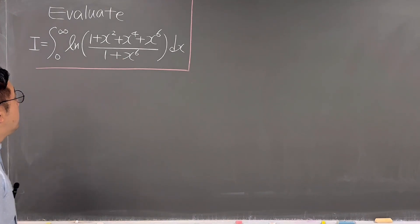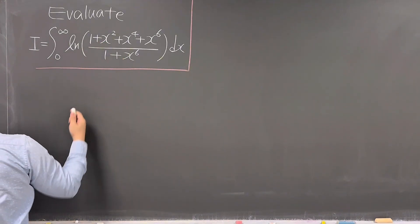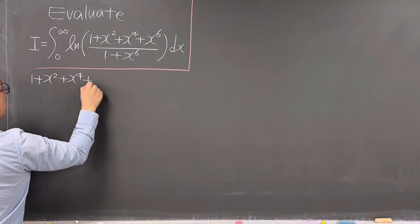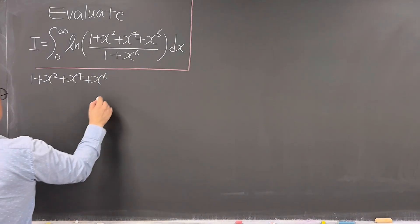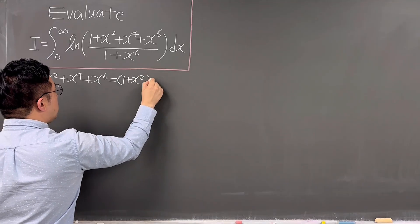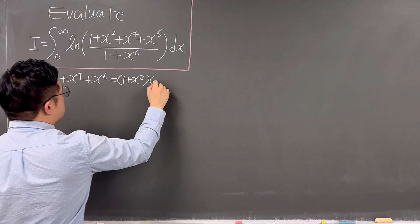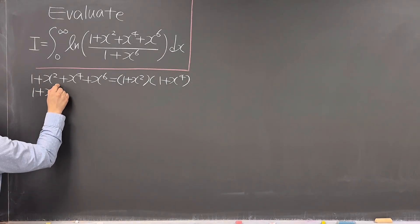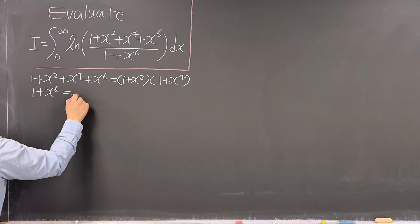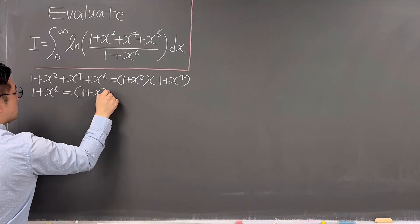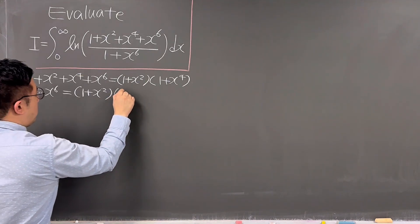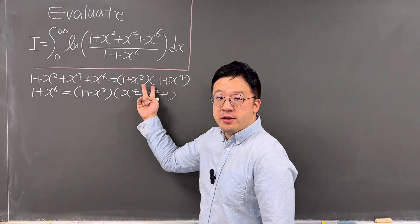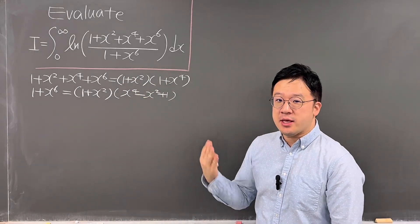About this argument, let me factor out the numerator and denominator. The numerator, 1 + x² + x⁴ + x⁶, can be factored as (1 + x²)(1 + x⁴). The denominator, 1 + x⁶, can be factored as (1 + x²)(x⁴ − x² + 1). So both the numerator and denominator have (1 + x²) that we can cancel out.